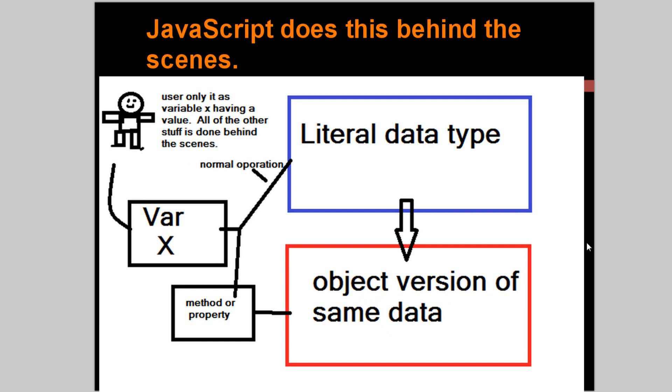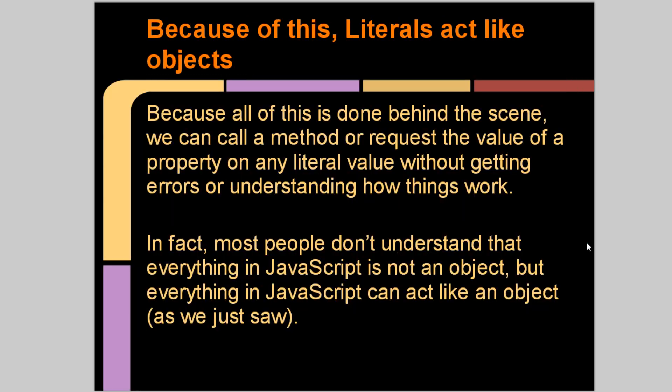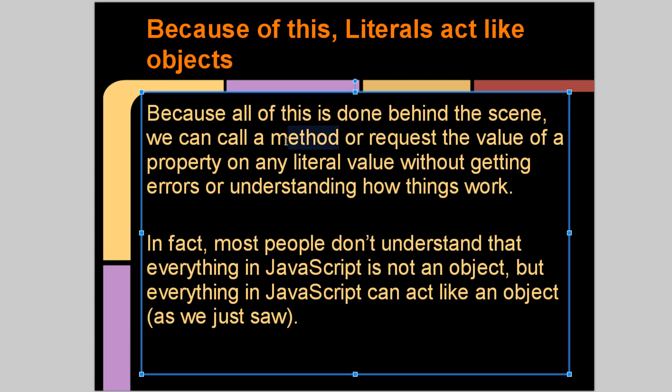The copy that JavaScript created is going to be used for methods and properties. Hopefully that's not too confusing. I'm trying to break it down simple, but I mean in general it's a confusing concept. Because of this, literals act like objects. Because all of this is done behind the scenes, we can call a method or request the value of a property on any literal value without getting errors or understanding how things work. In fact, most people don't understand that everything in JavaScript is not an object, but everything in JavaScript actually acts like an object as we just saw because we have the object copy.